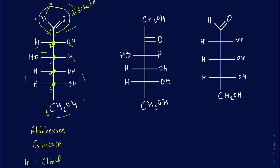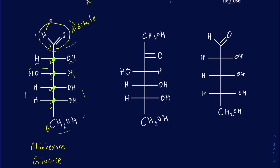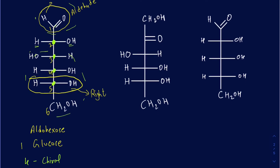Another important thing is to recognize the functional group — in this case we have an aldehyde — and then focus on the chiral center that's furthest away from your functional group. In this case, that's going to be carbon number five. Then you focus on the position of the OH. If the OH is on the right side — as it is here — then you're going to be calling that a D sugar. So this particular aldohexose is going to be D-glucose or D-aldohexose. If the OH were on the left side, then you would call that an L sugar.